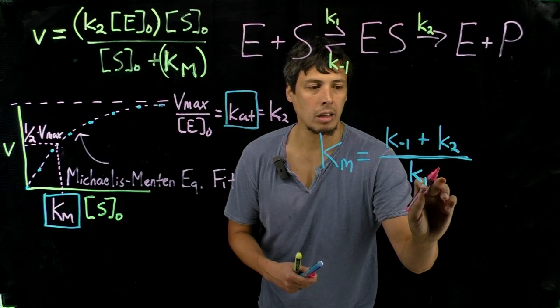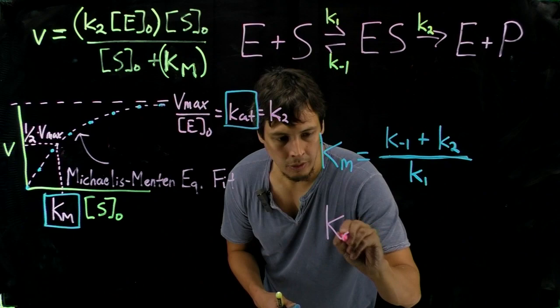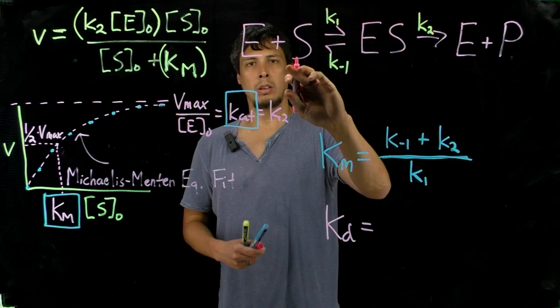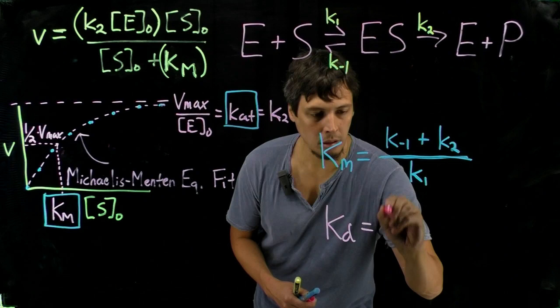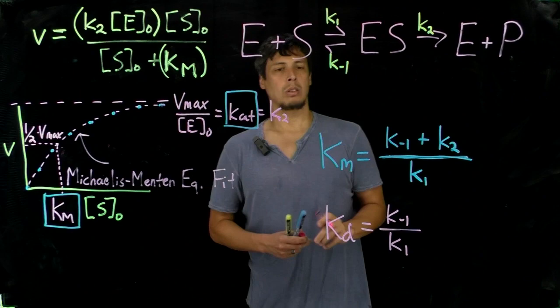Kd, however, is simply defined as this equilibrium right here. So, Kd for the substrate, for instance, would be K minus 1 over K1.